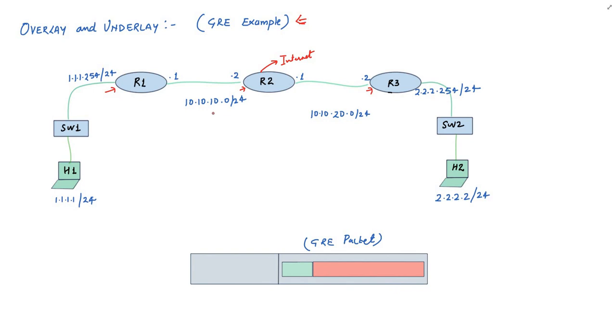The requirement is that I need to run a routing protocol between R1 and R3. This may be OSPF or EIGRP, but the issue is that I do not have a direct link between R1 and R3, but R1 and R3 have connectivity over IP network or internet.